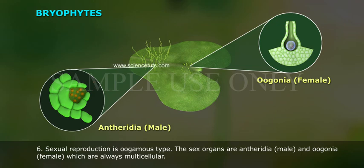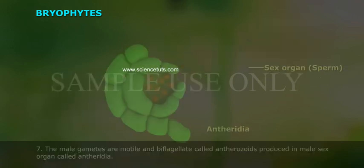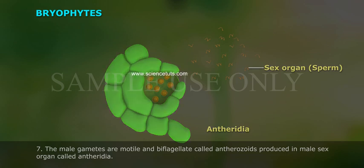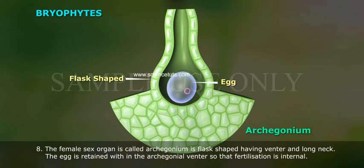6. Sexual reproduction is oogamous type. The sex organs are antheridia — male, and oogonia — female, which are always multicellular. 7. The male gametes are motile and biflagellate, called antherozoids, produced in the male sex organ called antheridia. 8. The female sex organ is called archegonium, which is flask-shaped having a venter and a long neck.